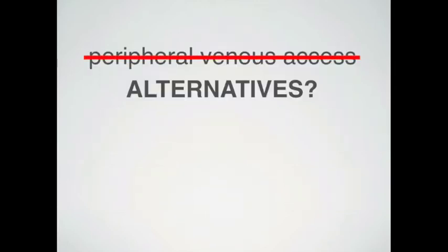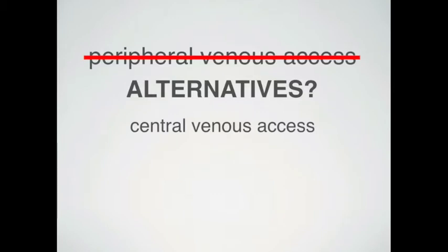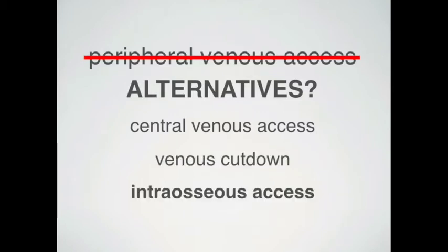So what can we do if peripheral cannulation fails? Well, there are basically three alternatives: central venous access, surgical venous cut-down, and intraosseous access.